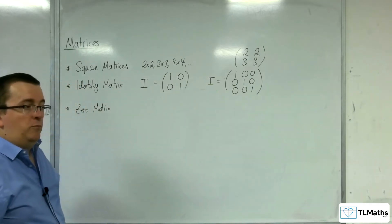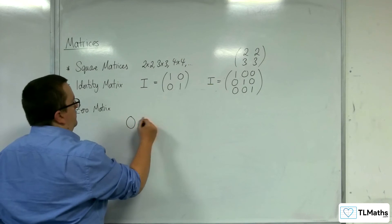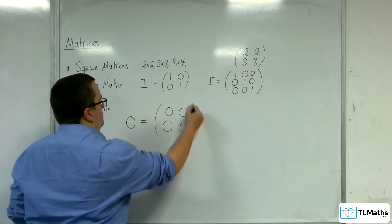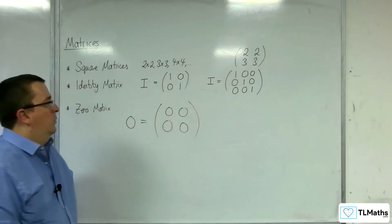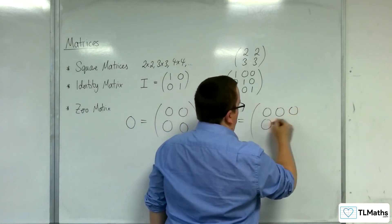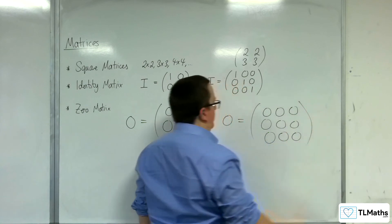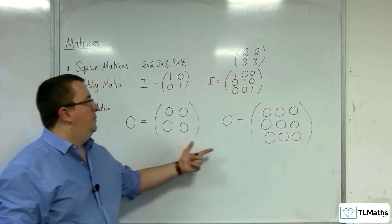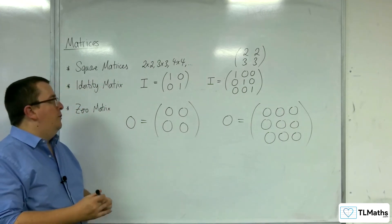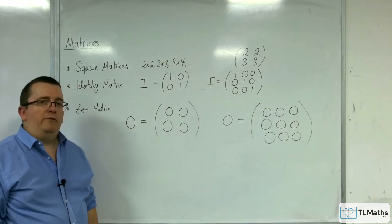The zero matrix is pretty much what it says on the tin. So for a 2 by 2 it's 0, 0, 0, 0, and for a 3 by 3 it's all zeros — a 3 by 3 grid of zeros. These are some special named matrices that we need to be aware of.